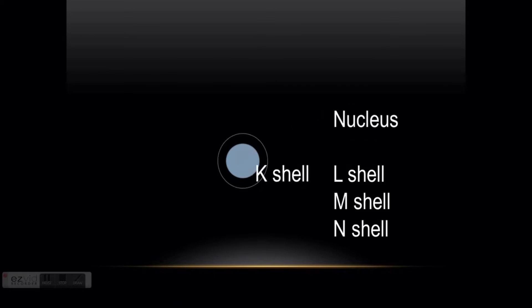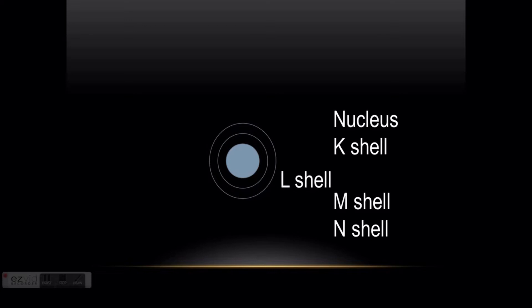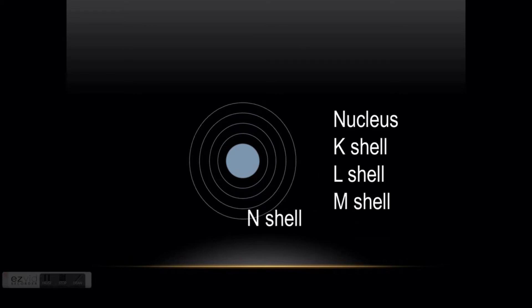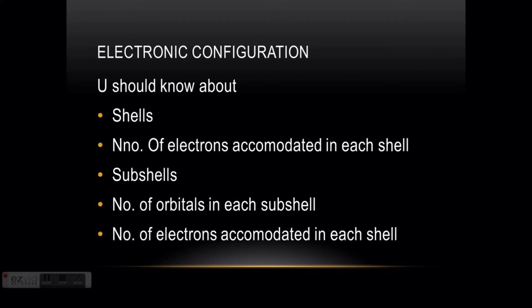This is the nucleus, and this is the K-shell — the shell nearest to the nucleus. Then L-shell, M-shell, and N-shell, and so on. To do electronic configuration, you should know about shells, the number of electrons accommodated in each shell, sub-shells, number of orbitals in each sub-shell, and number of electrons accommodated in each orbital. Many students get confused at this part.